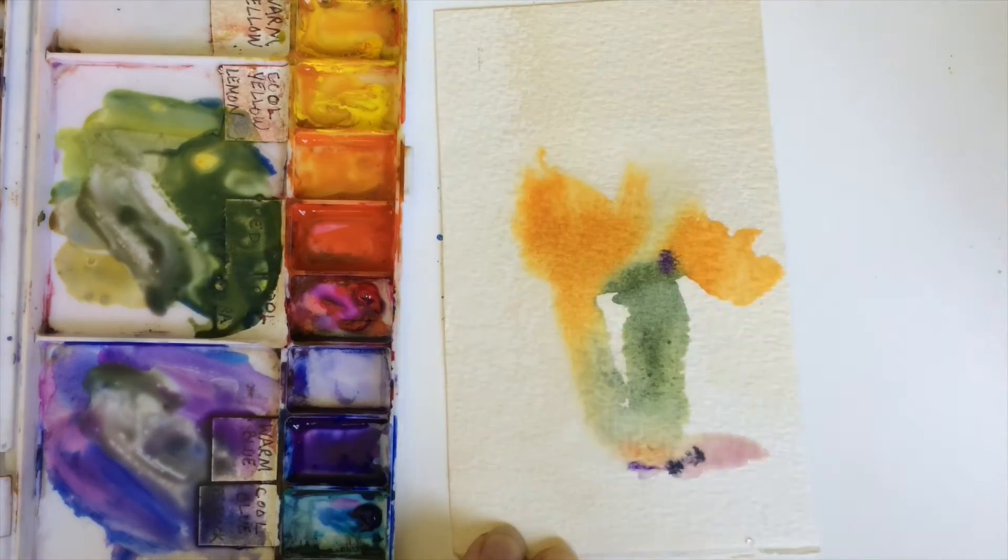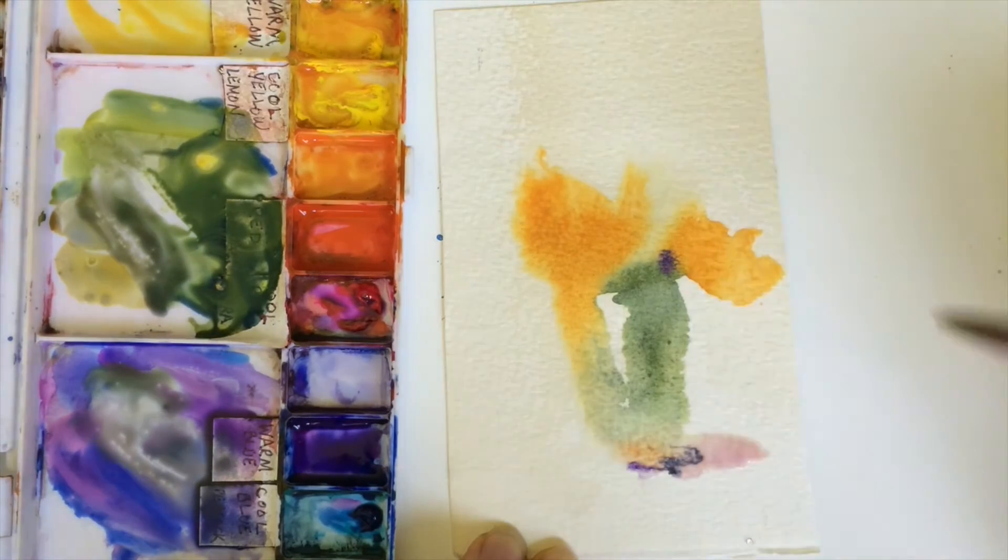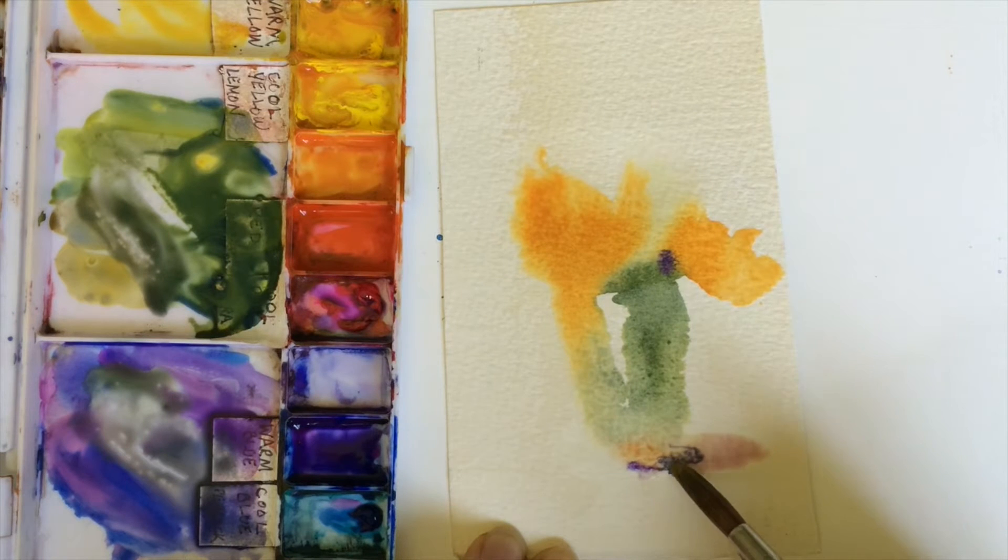Looking for a gray, trying to get a gray color. I want a grayer than that. That's too blue. So I'm going to add some yellow. Oh, it's getting a little grayer.